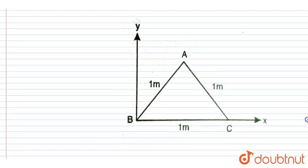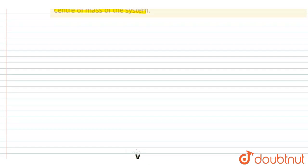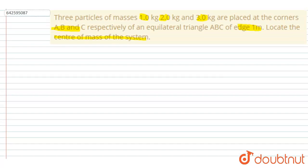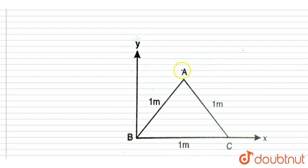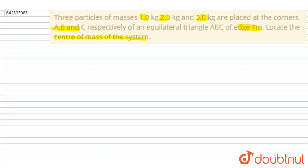And if you see, it is given that the masses of the particles are 1, 2, and 3 kg, right? So this is of 1 kg mass and this is of 2 kg mass. Okay, so we want the location of the center of mass if the side length of the edge is 1 meter.